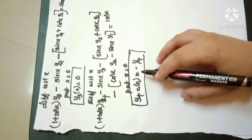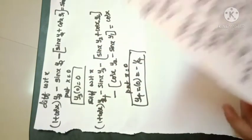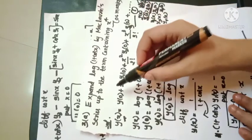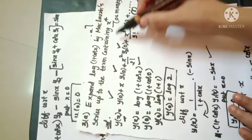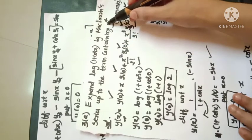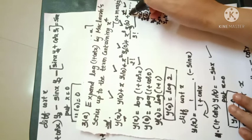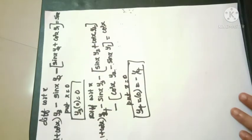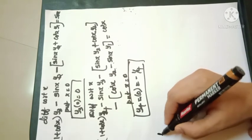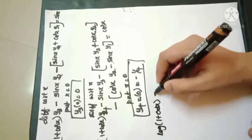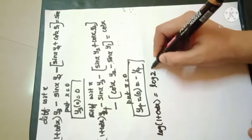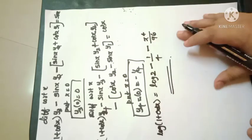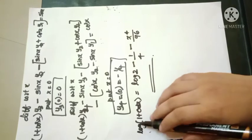Now we have y(0) = log 2, y1(0) = 0, y2(0) = −1/2, y3(0) = 0, and y4(0) = −1/4. Substituting into the Maclaurin expansion up to the x⁴ term: log(1 + cos x) = log 2 − x²/4 − x⁴/96. This is the Maclaurin expansion of log(1 + cos x).